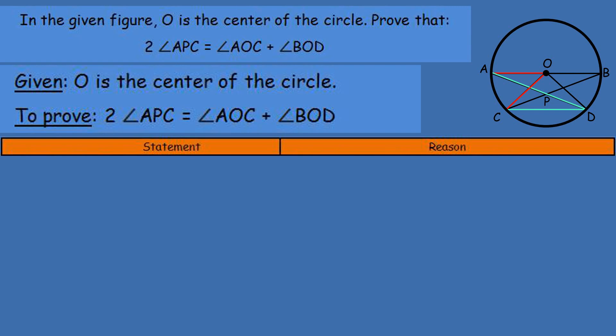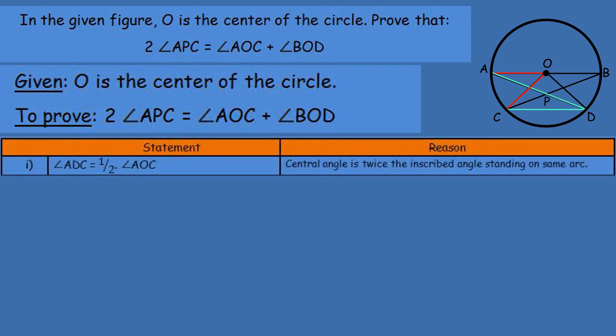Angle ADC is equal to half of angle AOC, right? This is the central angle is twice the inscribed angle standing on same arc. However, angle ADC, I mean, angle PDC upon you, right?